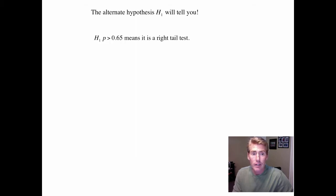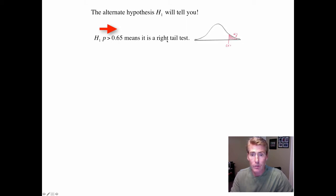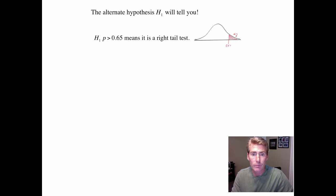If H1 has a bigger than — the arrow pointing to the right — it's a right-tailed test, and the picture has the shaded region on the right. Using a 98% level of confidence, alpha equals 0.02, and that whole amount goes in the right tail. We then look up the critical value in Table A2. If the arrow is pointing to the left, it's a left-tailed test, and the critical value on the left is negative. We'll practice that in just a second.